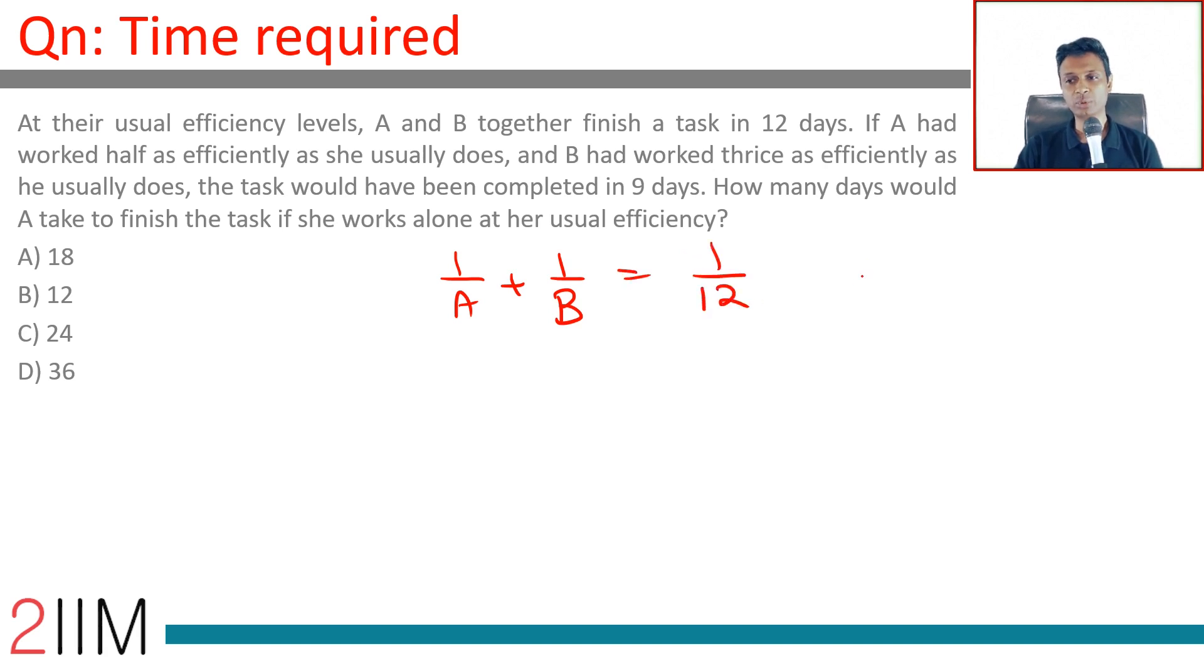Or 1/12th of the task, because they finished the whole thing in 12 days. If A worked half as efficiently as he usually does (1/2a, half of 1/a) and B worked thrice as efficiently (3/b), task gets completed in 1/9. How many days would A take to finish the task if she works alone at her usual efficiency?